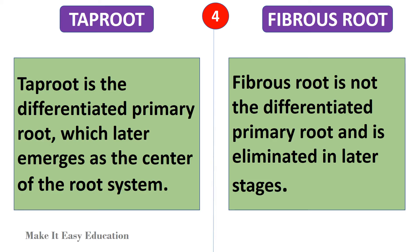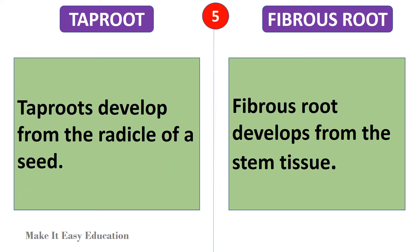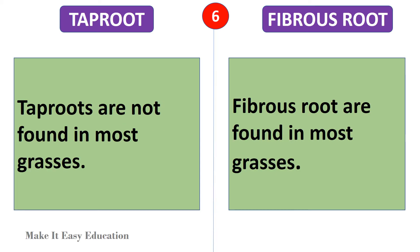Taproot is the differentiated primary root, which later emerges as the center of the root system. Fibrous root is not the differentiated primary root and is eliminated in later stages. Taproots develop from the radicle of a seed. Fibrous root develops from the stem tissue.